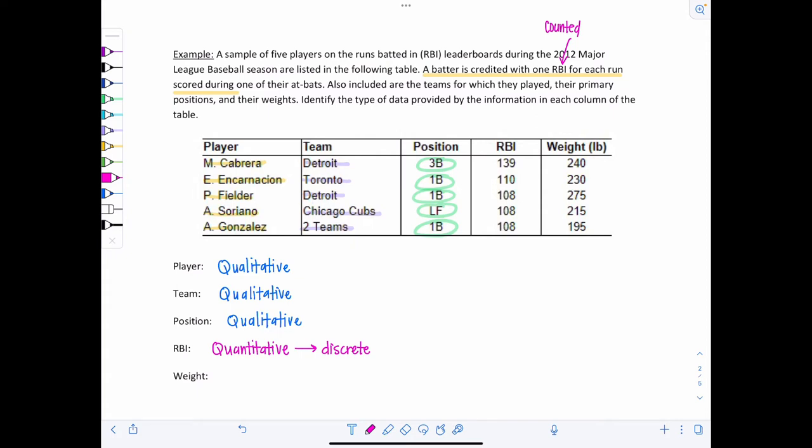And then last column here is the weight of each of the players in pounds. That's clearly quantitative. But weight is measured. Quantitative. Weight is measured, not counted. So that would make it continuous. So you'll have to do something similar with your homework. Hopefully it's not too difficult.